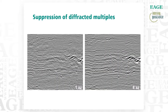To highlight the suppression of diffracted multiples — this is up shallow again, showing the shallow channel system on the right-hand side. Going from one-azimuth to six-azimuth, we really got rid of a lot of that noise from those remnant multiples.